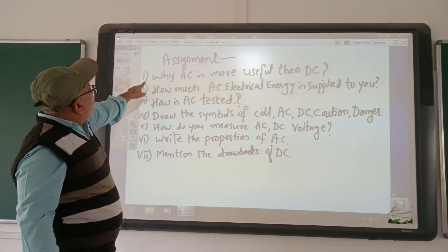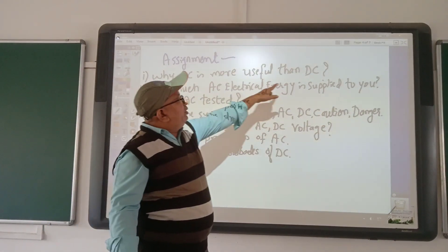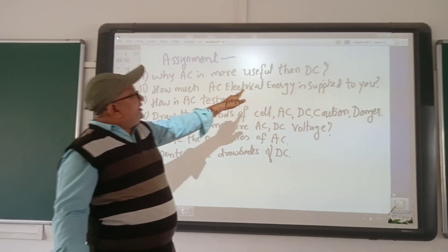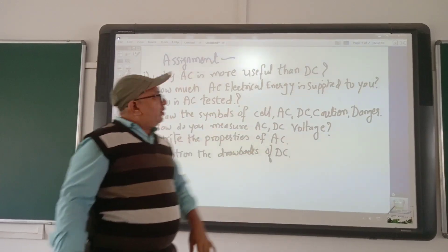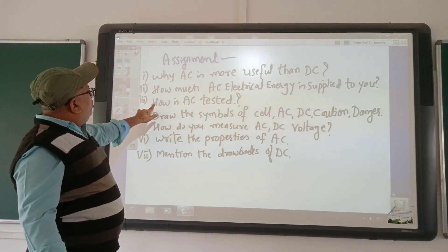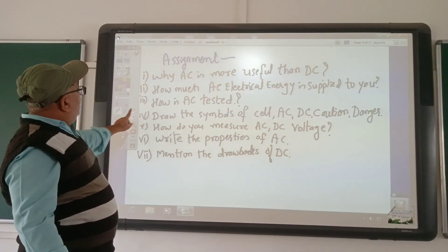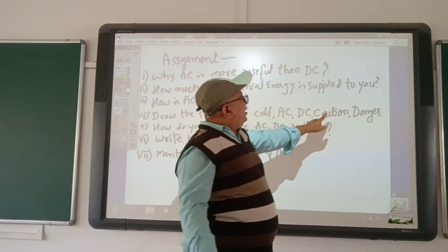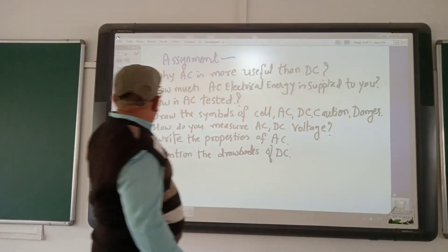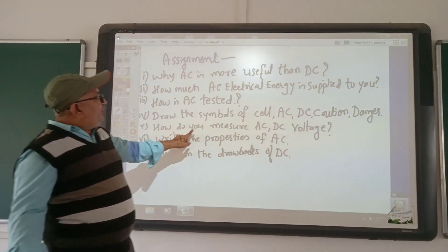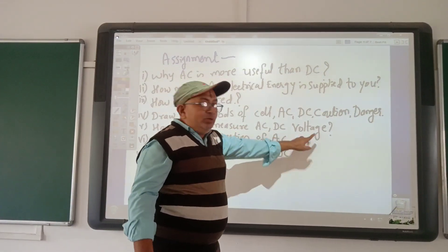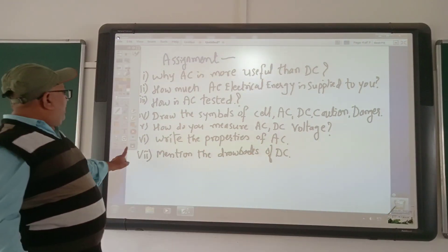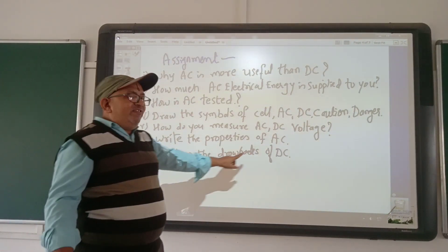Assignment questions: First, why is AC more useful than DC? Second, how much AC electricity is being supplied to you? Third, how is AC tested? Fourth, draw the symbols of AC and DC, including caution and danger symbols. Fifth, how do you measure AC and DC voltage? Sixth, list the properties of AC. Seventh, mention the drawbacks of DC.